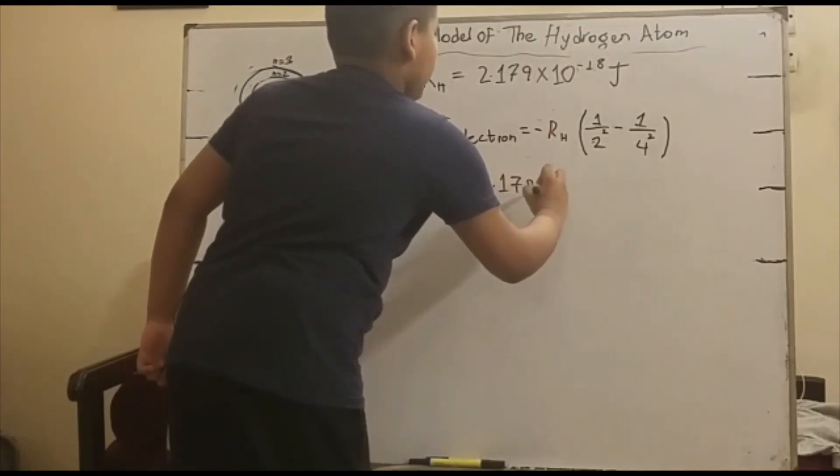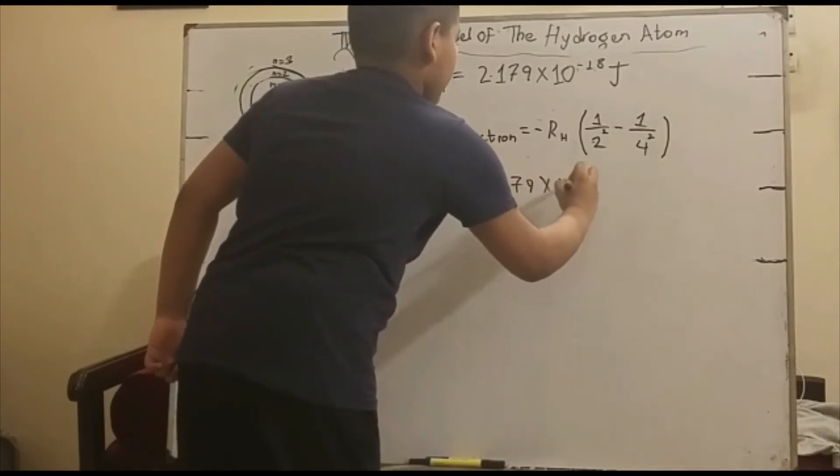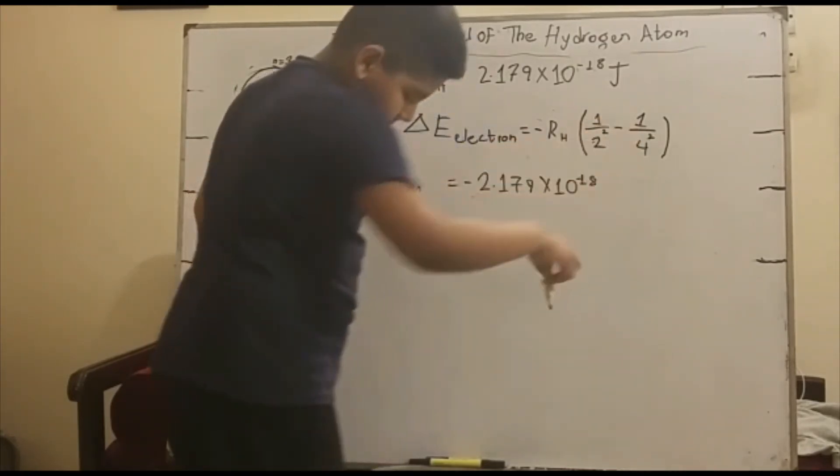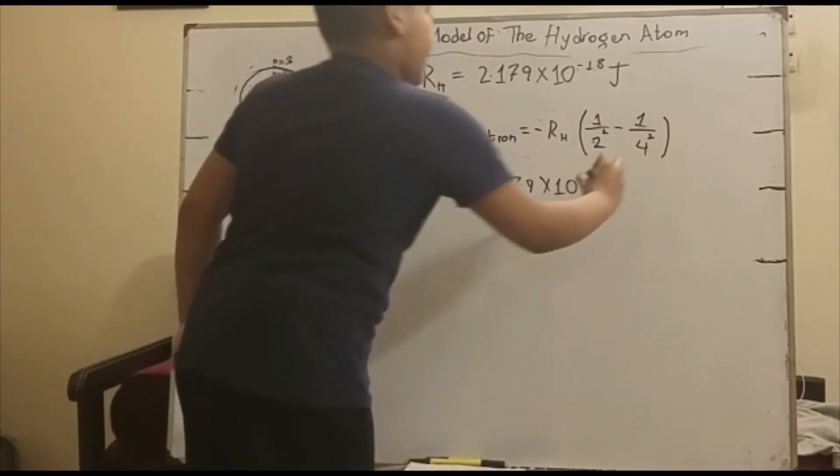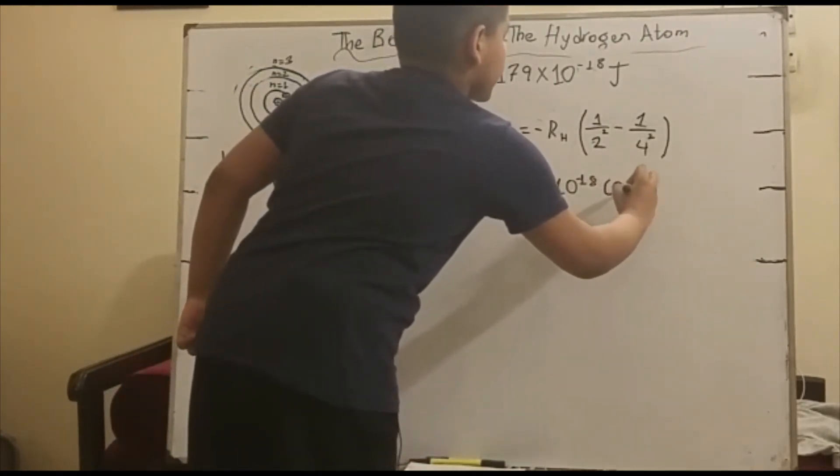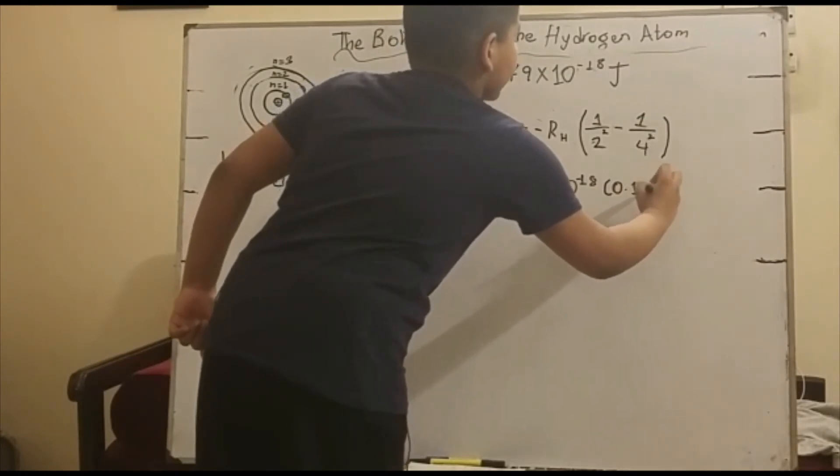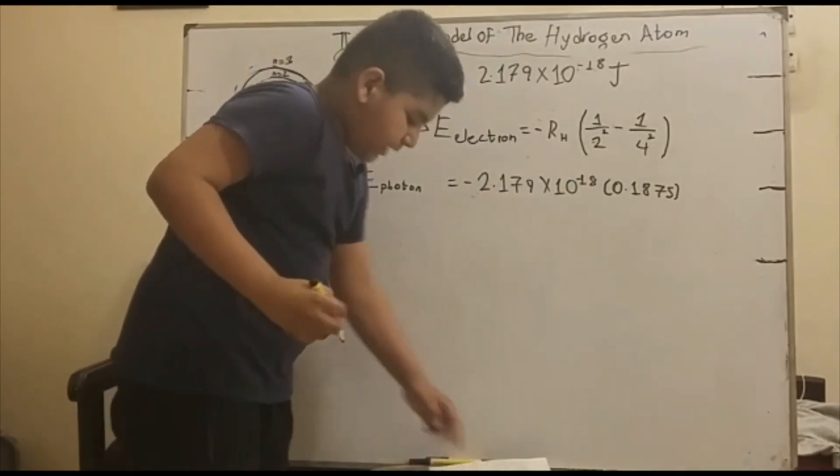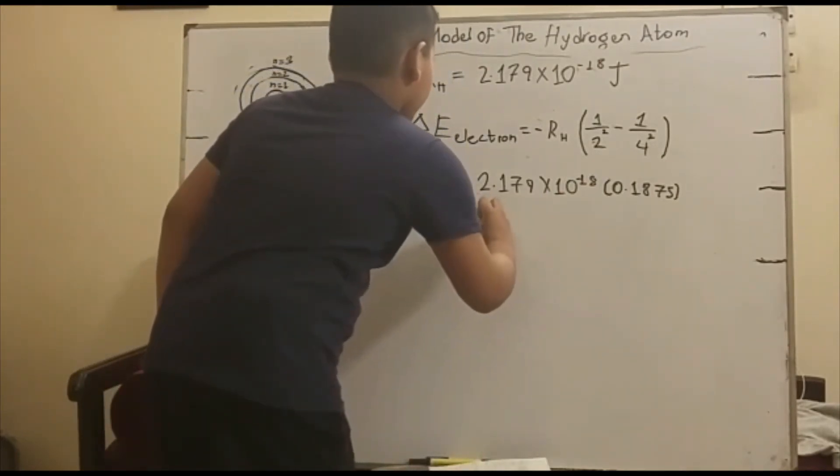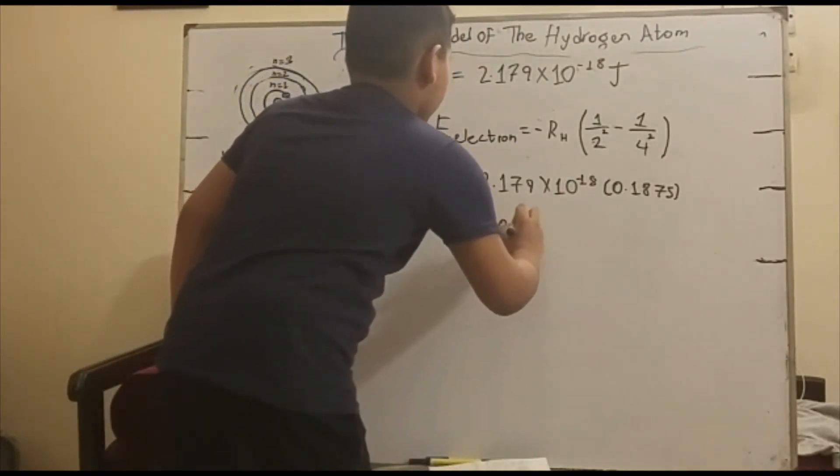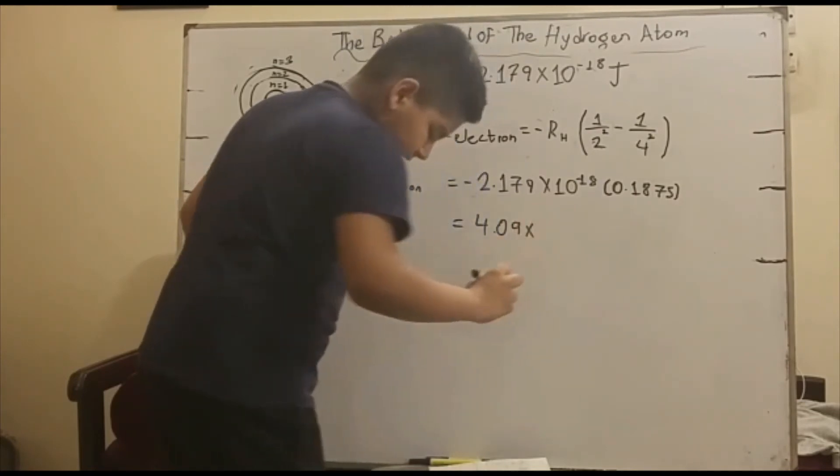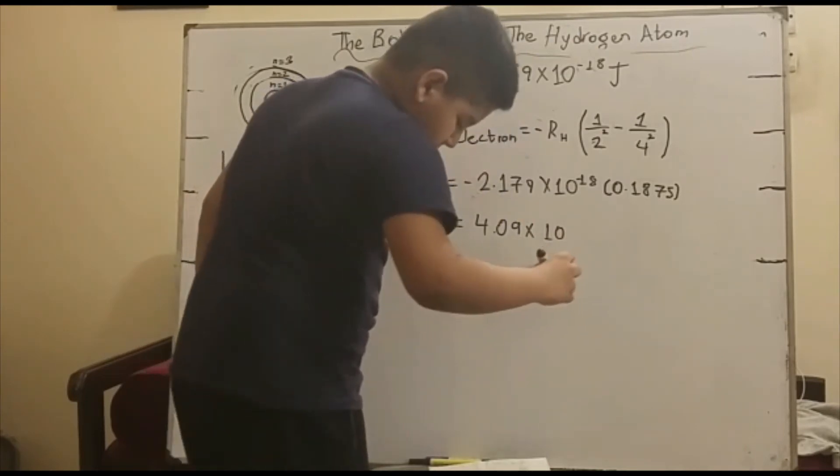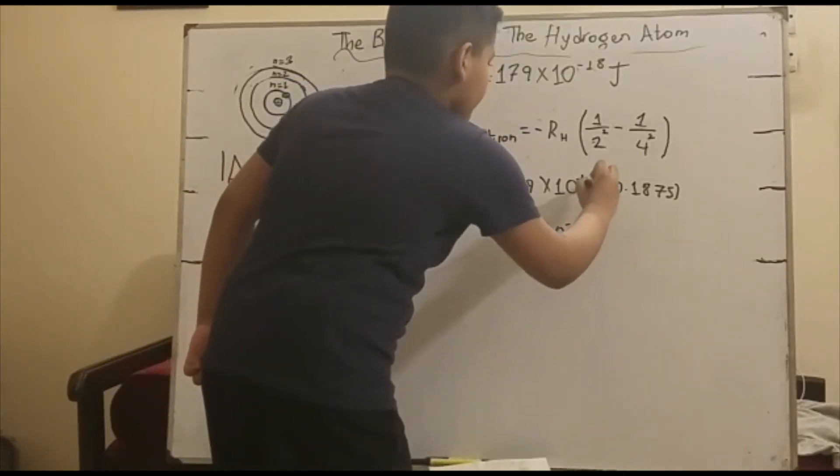And this, if you plug it in on a calculator, you'd find this would be 0.1875. And now if we multiply these numbers, we're going to get 4.09 times 10 to the negative 19 joules.